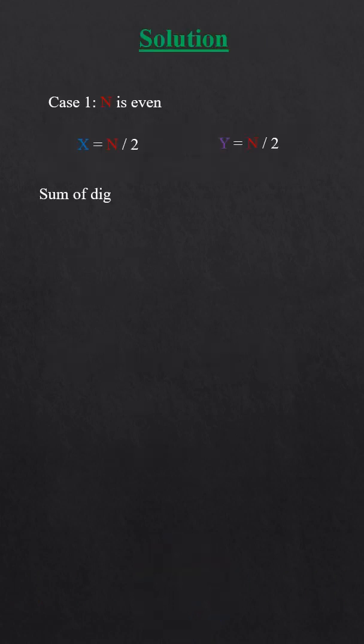Let's move to solution. When n is even, take x and y as n by 2, giving sum of digits equal.